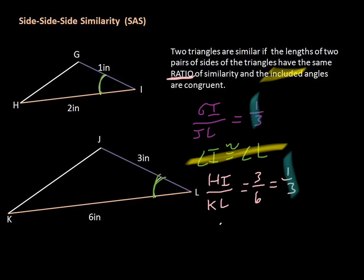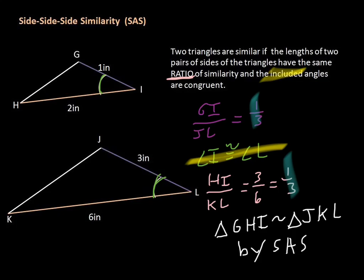So we can say that triangle GHI is similar to triangle JKL by the Side-Angle-Side similarity postulate or property.